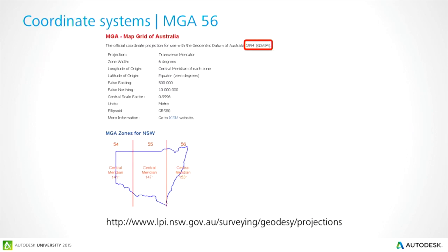To kick off, this is the MGA56 — the Map Grid of Australia for this region, New South Wales. Coming from the architectural side of the business, this is kind of new to me. Wherever you locate your building in the world, it has different coordinate systems. For this region we use the MGA56 and the 1994 GDA. This is really important when you're configuring all this data and aligning it.